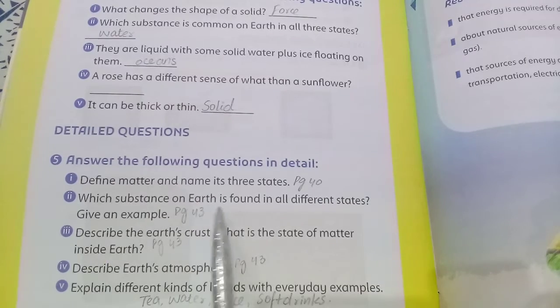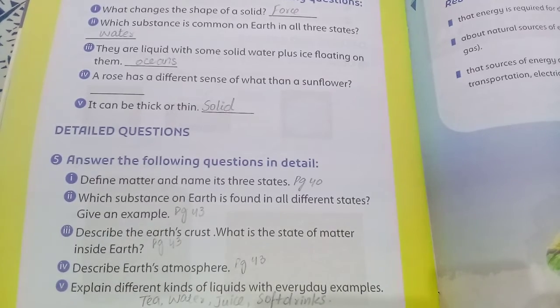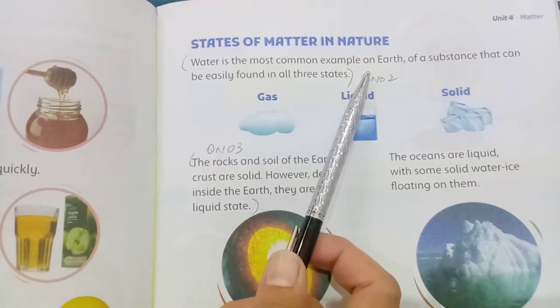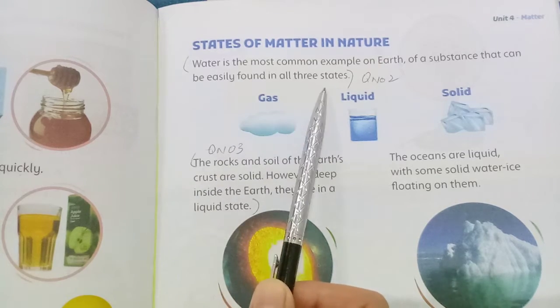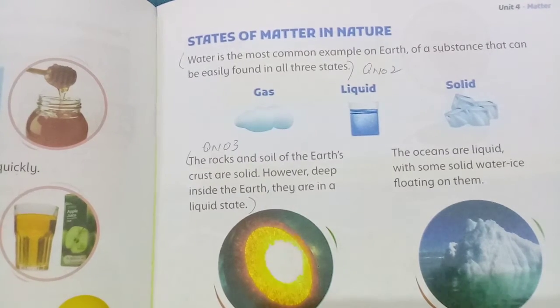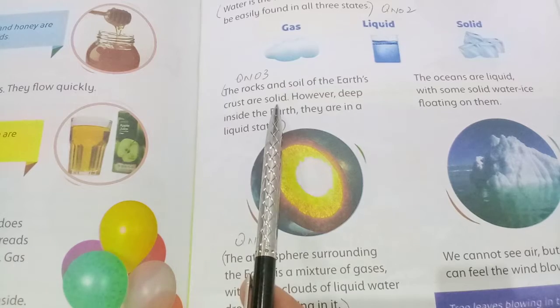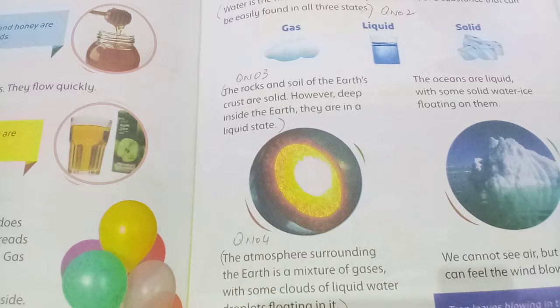Which substance on earth is found in all different states? Give an example. Water is the most common example on earth of a substance that can be easily found in all three states. Describe the earth's crust and what is the state of matter inside the earth. The rocks and soil of earth's crust are solid; however, deep inside the earth they are in a liquid state.